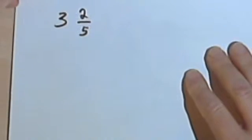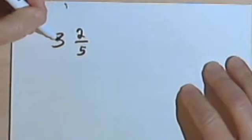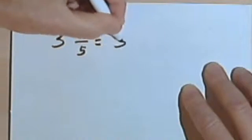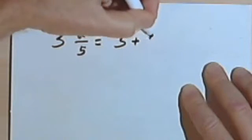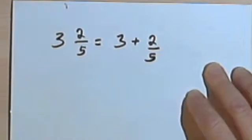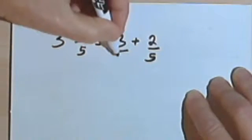We're going to start with a mixed number. And the thing to remember about these is that if we have 3 and 2 fifths, that's the same as saying 3 plus 2 fifths. Now, instead of thinking that this is a whole number, which it is, I'm going to think of it as a fraction.